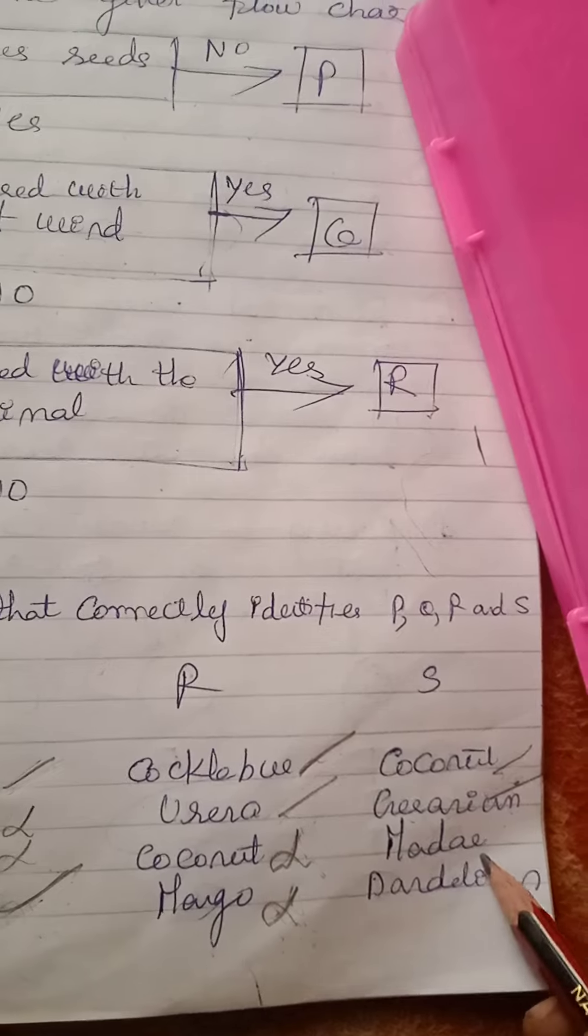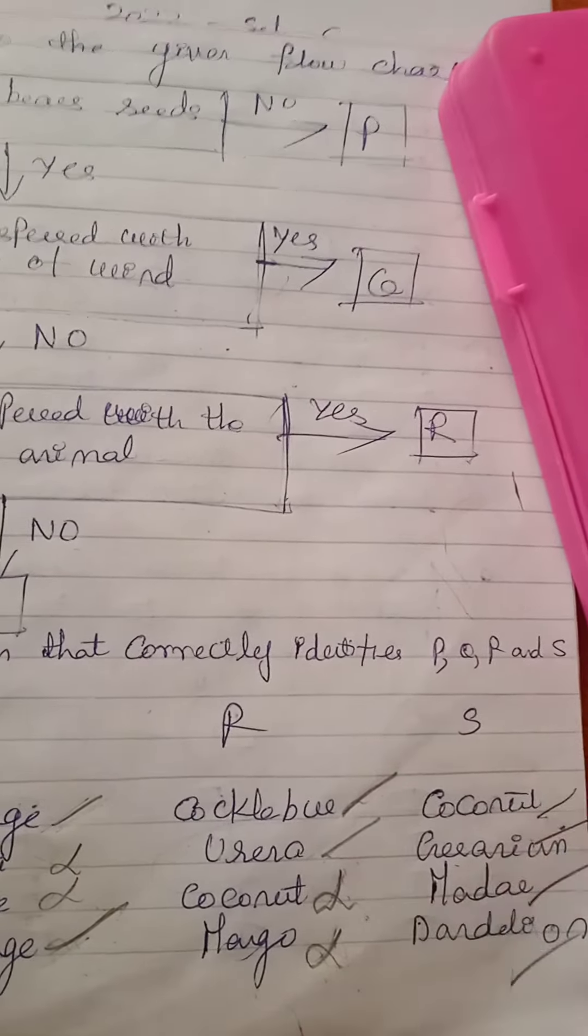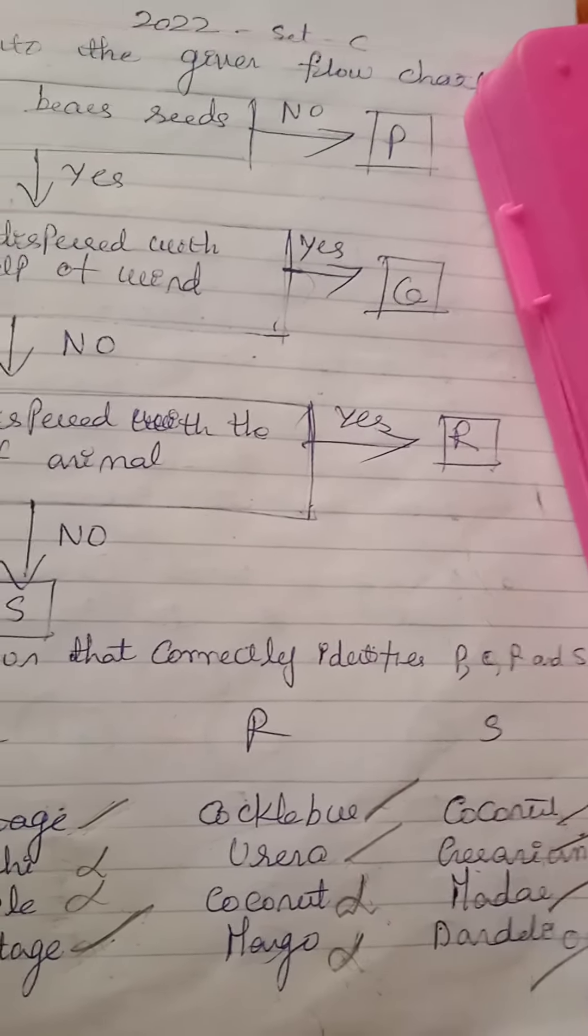Mardar gets dispersed by wind and Dandelion plant also gets dispersed by wind. All four will come as all four do not get dispersed by animals.